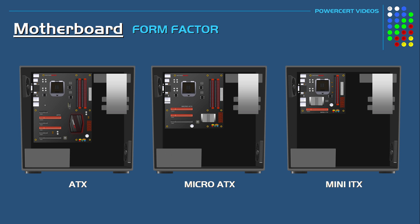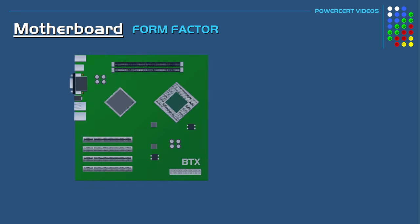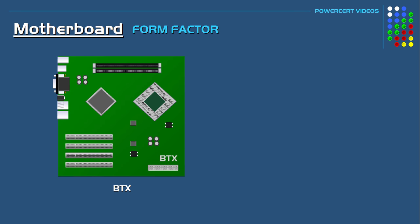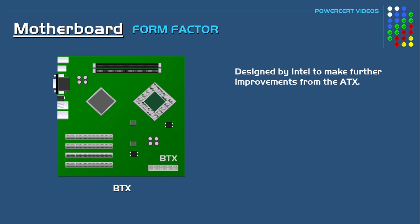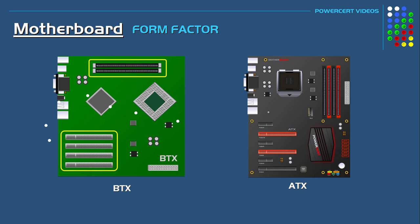This is because all three boards — the mounting holes, their rear input/output panels, and their expansion slots — all line up the same. There's also the BTX form factor, designed by Intel to make further improvements from the ATX, such as an improved bore design which creates a more inline airflow and improves cooling. Notice how the memory and bus slots are horizontal, flowing with the direction of the airflow instead of inhibiting it, compared to the ATX form factor.